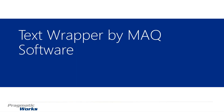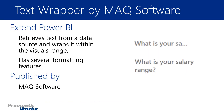Welcome back to the Power BI custom visuals course. In this module we're going to be looking at the Text Wrapper by MAQ Software. This is a very simple visual — the basic idea is to take text from your dataset and wrap it. Think about text wrapping in Excel: on the right you can see unwrapped text on top, and text wrapped to the next line on the bottom. It allows us to pull in data and wrap it within the visual's range, auto-adjusting to fit the values.